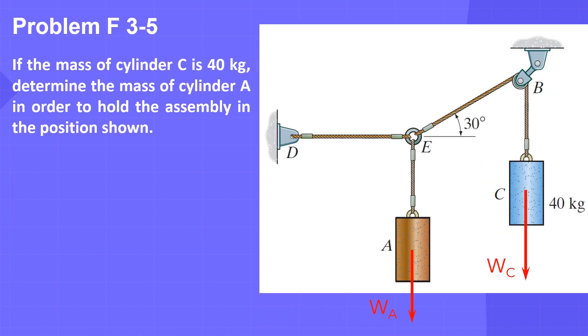The analysis of the given system shows that we have two external forces WA and WC. Consequently, tensions will be generated in chords EA, EB, and ED.